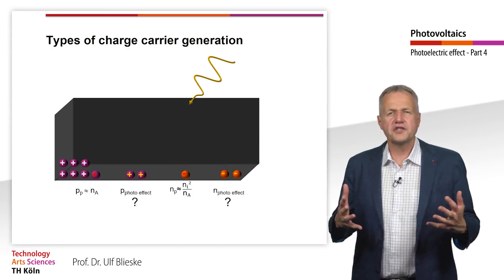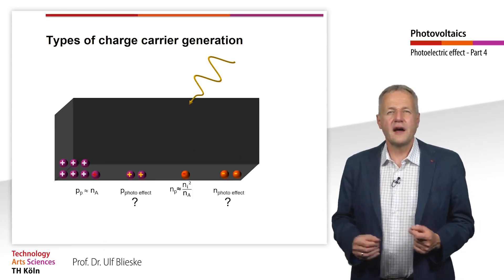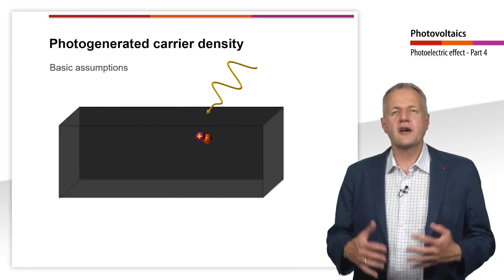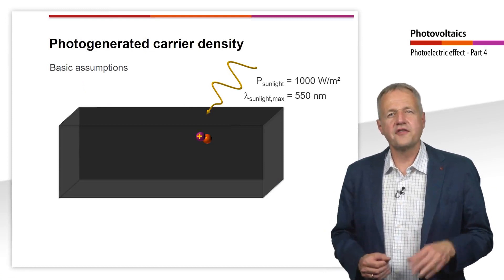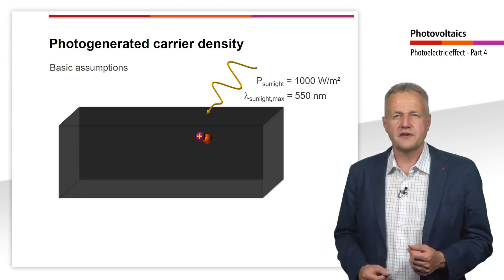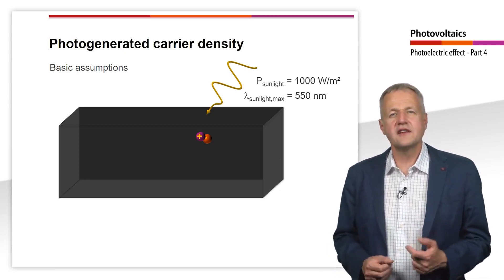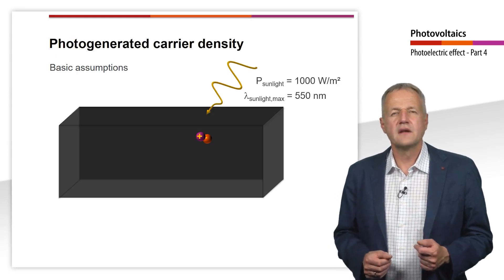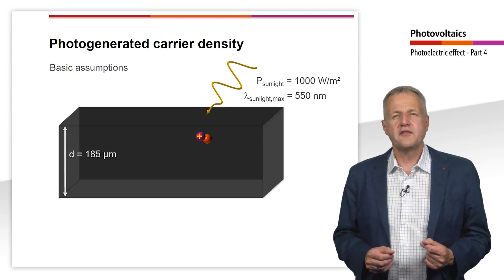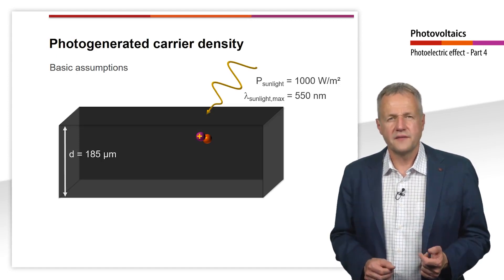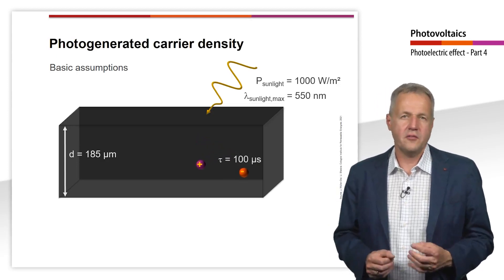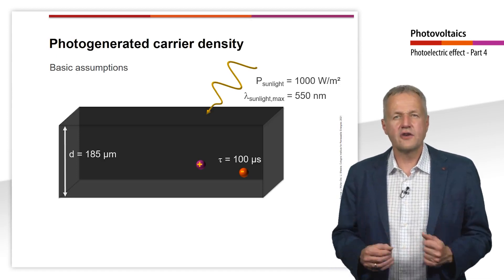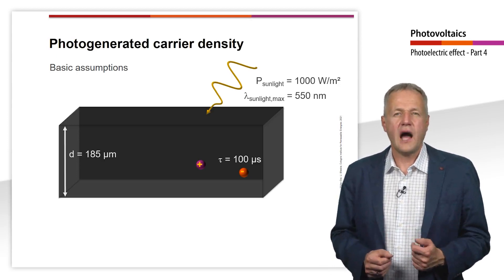More electron-hole pairs are now generated by incident photons. To calculate the concentration of these photo-generated charge carriers, we make a few assumptions. First, the power density of the incident radiation on the semiconductor is 1000 W/m². Second, sunlight has a maximum intensity at a wavelength of 550 nm, so we will only look at this wavelength at first. The thickness of the semiconductor is 185 µm, a typical value for a solar cell. The lifetime of minority charge carriers in p-doped silicon, where electrons are the minorities, is about 100 microseconds.